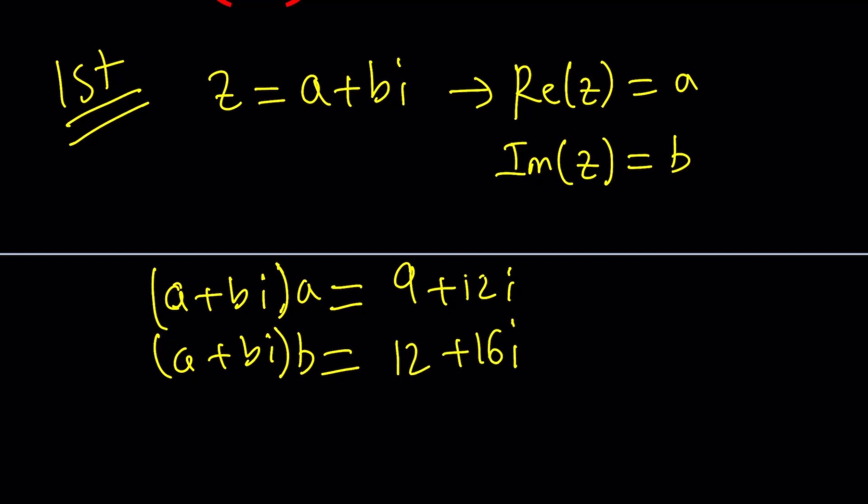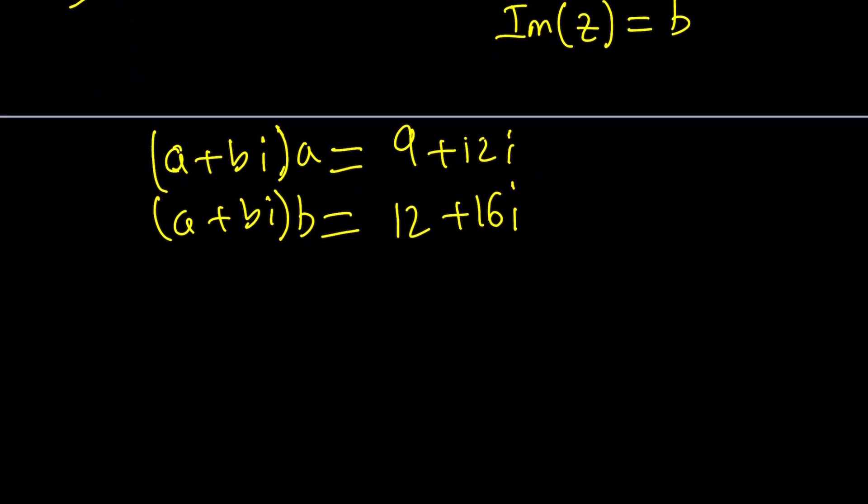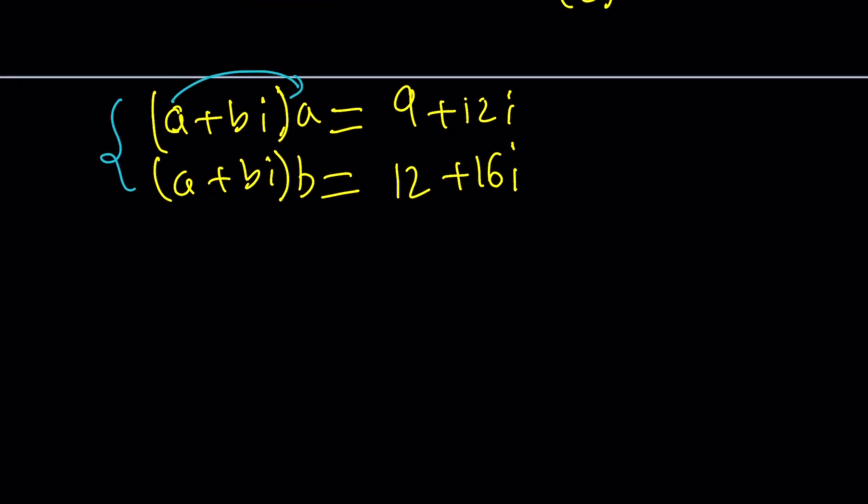Now what can I do with this? Let's go ahead and distribute. A times A is A squared, that's going to give me A squared plus ABI equals 9 plus 12i. And AB plus B squared i equals 12 plus 16i.